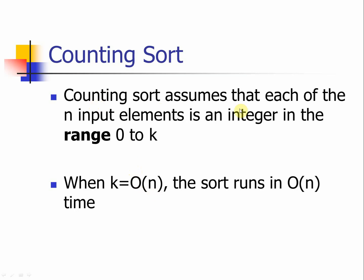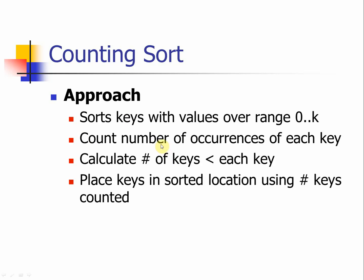Counting sort assumes that each of the n input elements is an integer in the range from 0 to k. So there is an additional parameter here. Counting sort considers the number of inputs that every sorting algorithm needs to look into. However, counting sort requires you to have pre-knowledge — before you sort it, you need to know the numbers are in a range from 0 to a certain amount. Counting sort sorts keys with values over range 0 to k, then counts the number of occurrences for each key, and based on that the sorting is done.